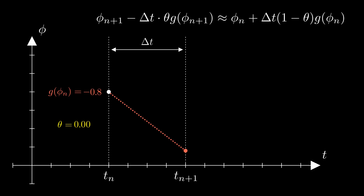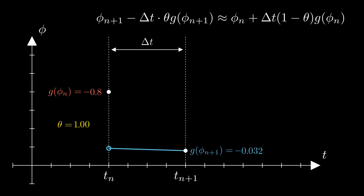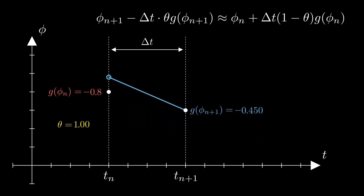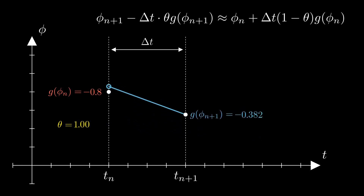Now let's try theta equals 1. We start with a guess for phi_n+1, work out the slope, and extrapolate backwards from tn+1 until we reach tn. But our backwards extrapolation doesn't match up with the known value at phi_n — it's too low. So we try a bigger guess for phi_n+1; now we've gone too far, and we adjust the guess again. The correct value of phi_n+1 is the one which, when we extrapolate backwards by delta t, gives us phi_n back. This is implicit Euler, and it's more complicated to calculate than explicit Euler, but the unconditional stability is worth it.